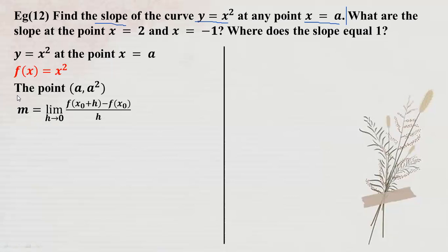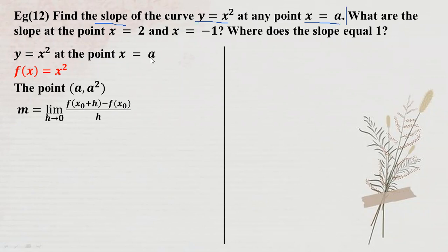So M is the derivative. The derivative is defined by taking the limit as h approaches 0. M is equal to the limit as h approaches 0 of f(a + h) minus f(a) divided by h.